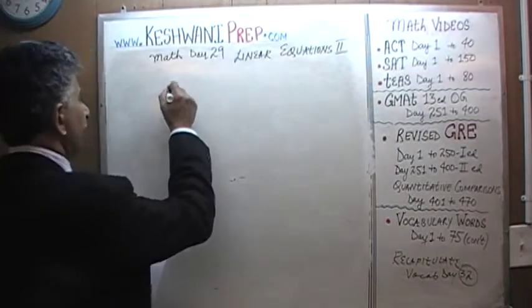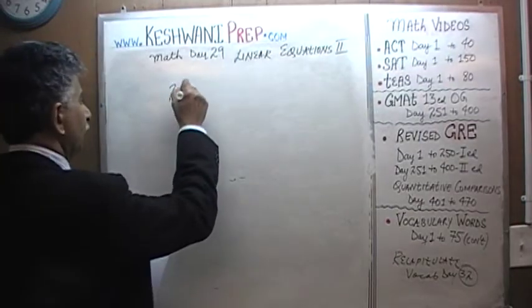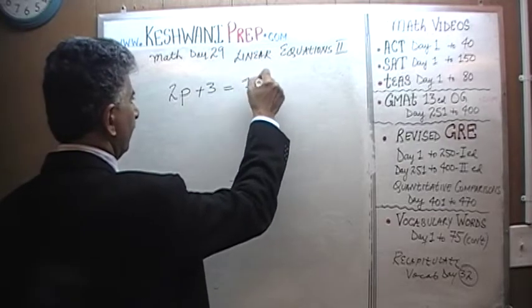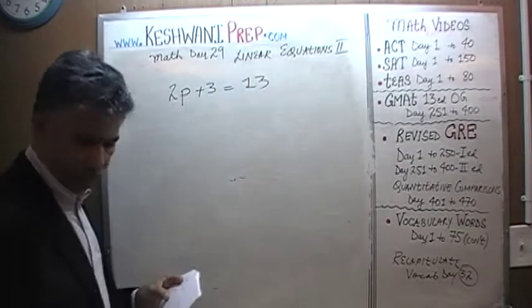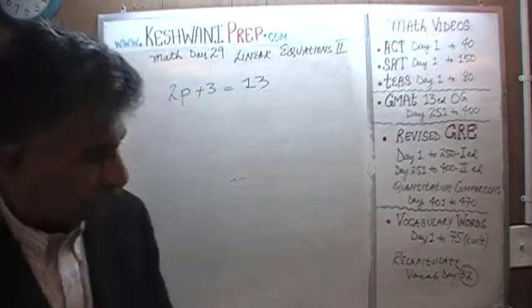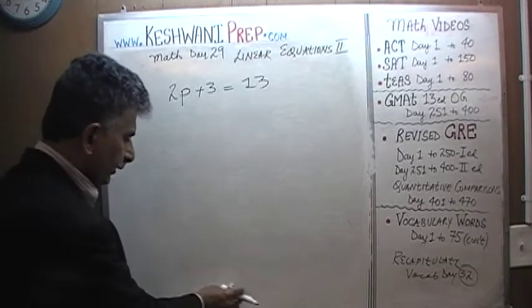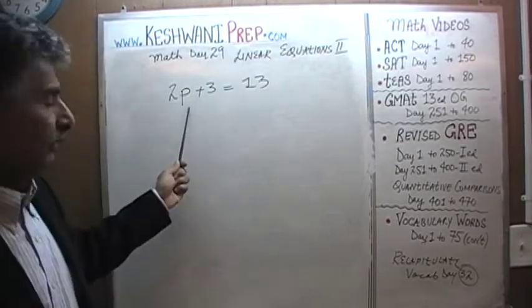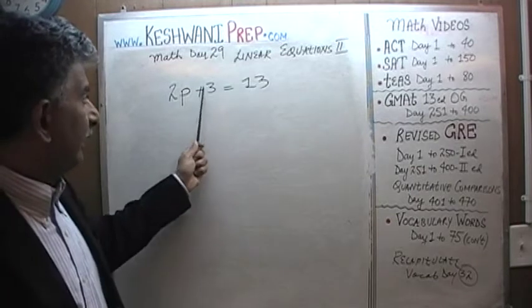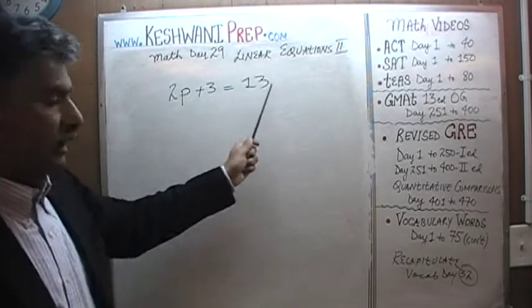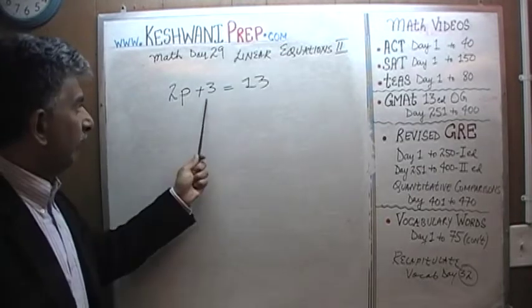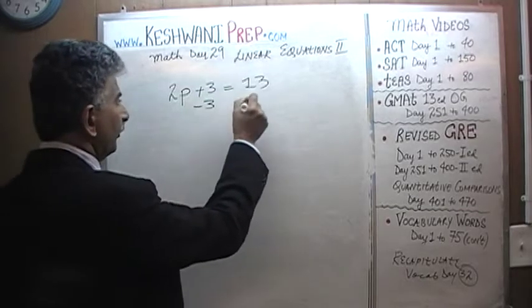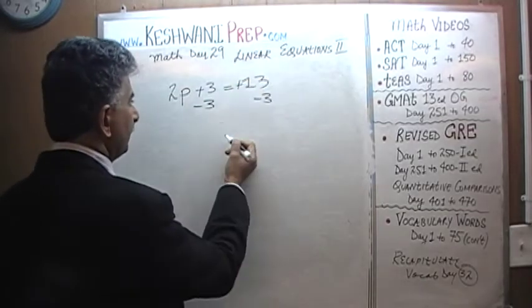The first equation that we have is 2P plus 3 equals 13. Our job is to get the unknown by itself as quickly as possible. Anything that is a known quantity, we want to bring it to the other side. We bring the 3 to the other side by subtracting 3 from both sides. This is a positive 13.